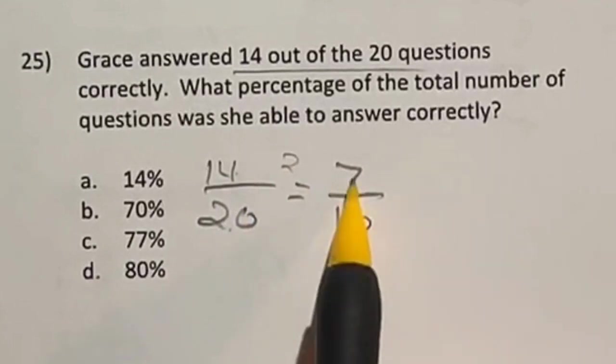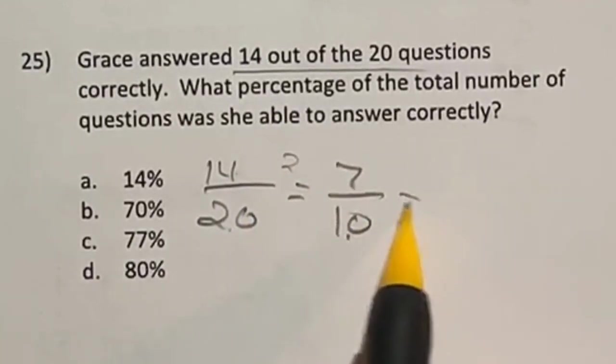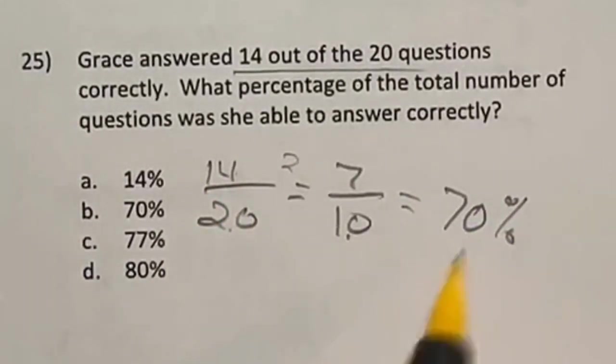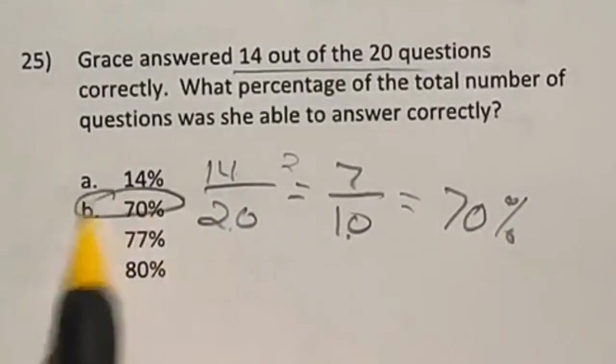Now, I want to do that because I know that 7 out of 10 is an easy percent to find at 70%, whereas I may not have seen that right away with the 20. So 70% is our final answer, which is B.